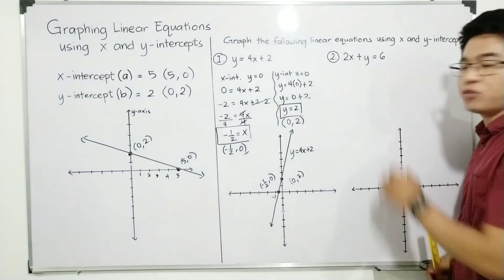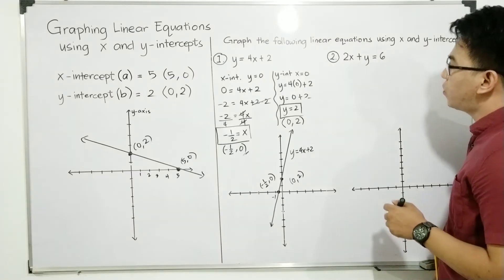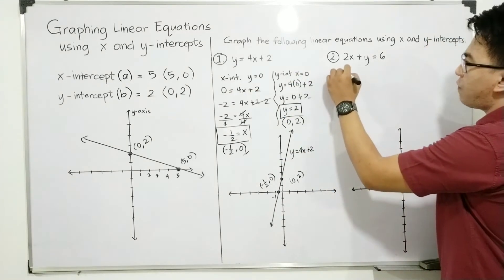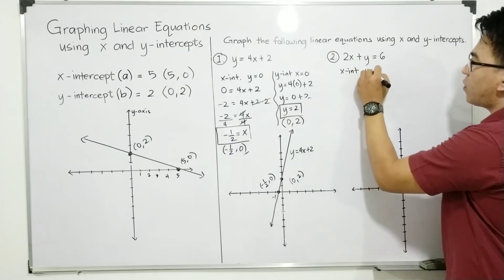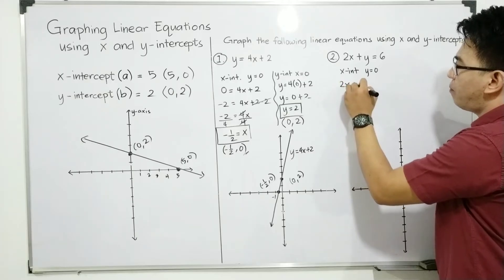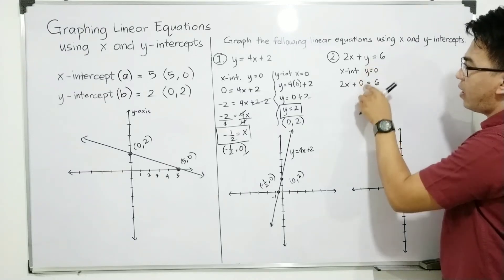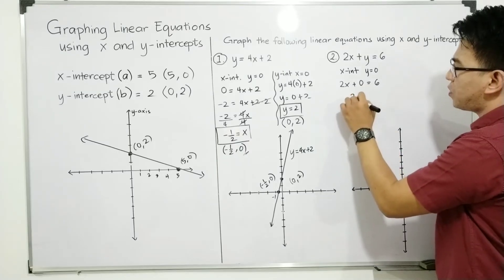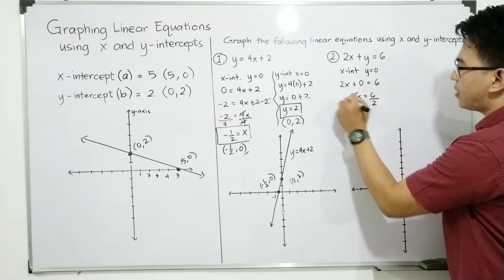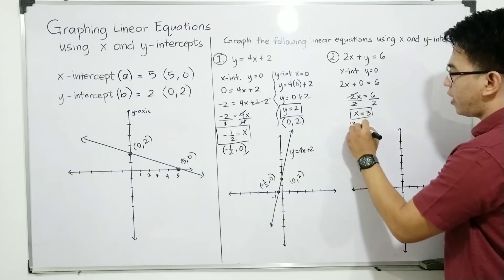In item number 2, we are given the equation 2x + y = 6. We will do the same process — calculate for the x-intercept and calculate for the y-intercept. For the x-intercept, your y is equal to 0. Substituting y = 0: 2x + 0 = 6, which simplifies to 2x = 6. Dividing both sides by 2, x = 3. Therefore, the coordinates of your x-intercept are (3, 0).